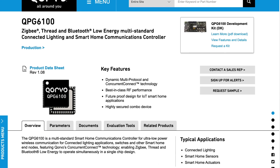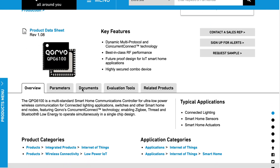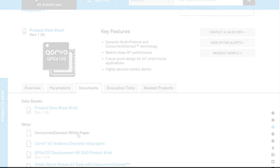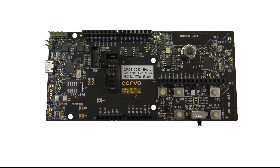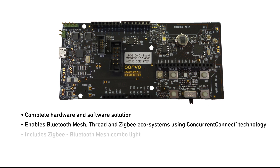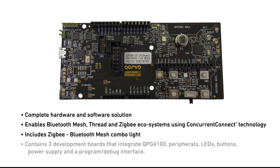Want to learn more about Concurrent Connect technology? Read our white paper available on Corvo.com, or on our Design Hub, or on the Documents tab on the QPG6100 part page. If you're ready to start exploring the full capabilities of Concurrent Connect technology in your IoT product, our powerful QPG6100 development kit simplifies your product design. It comes with a concurrent ZigBee router, Bluetooth mesh smart light reference application, as well as sample applications for many other popular smart home devices.